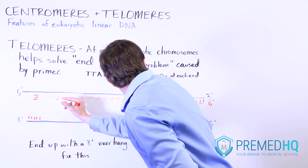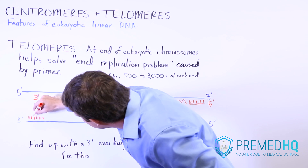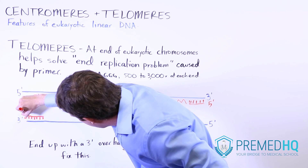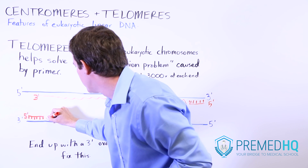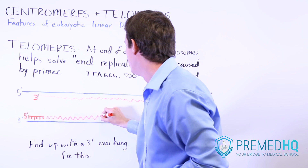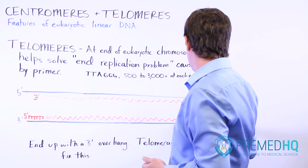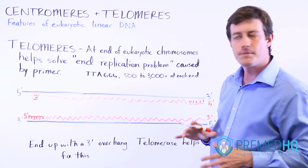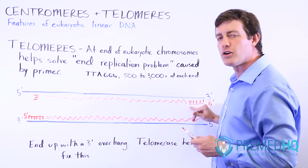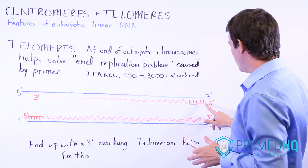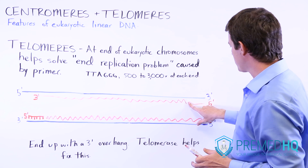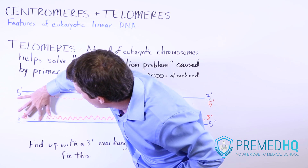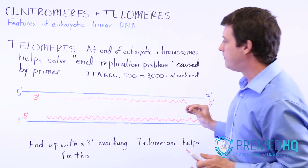On the complementary strand, we lay down a primer of six bases — the exact number isn't all that important. We have the five prime end, and the squiggly line represents the DNA being laid down by the polymerase. But remember, this primer itself isn't replicated, so eventually it will just disappear.